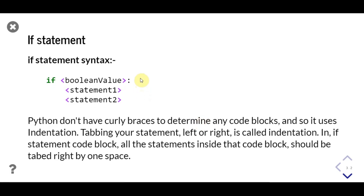An if statement consists of the if keyword followed by a boolean value, which can be true or false. If the boolean value is true, statements present in the code block will be executed. Python uses indentation instead of curly braces. Indentation means tabbing the statements left or right by one tab or four spaces. Statements inside the if code block need to be tabbed once to the right compared to the if keyword, and all statements inside the same code block should have the same level of indentation, or an indentation error will occur.